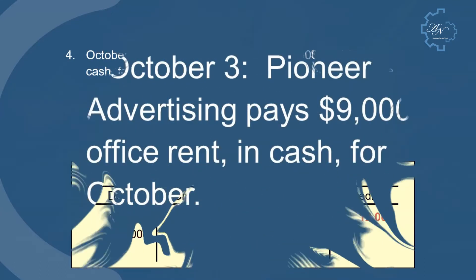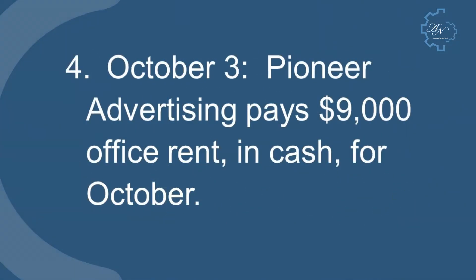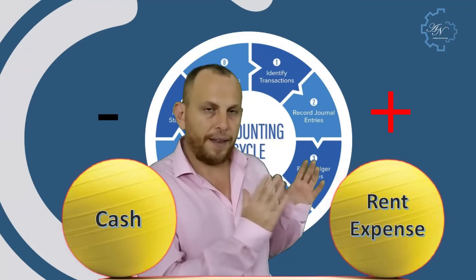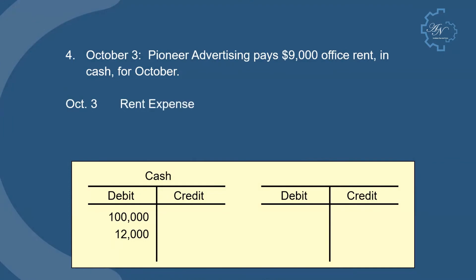October 3: Pioneer Advertising pays $9,000 office rent in cash for October. We have rent expense and cash. Rent expense increases and cash decreases. The entry is: debit rent expense, credit cash. The posting looks like this.